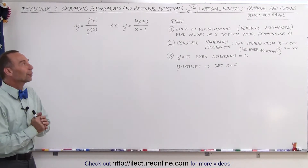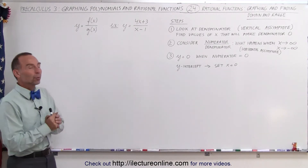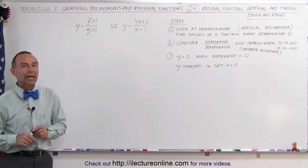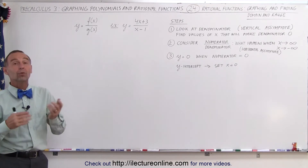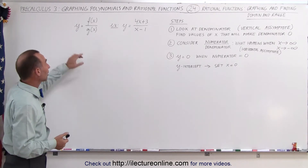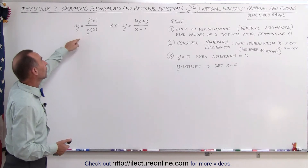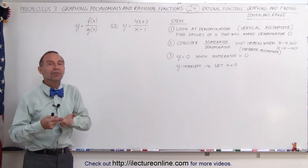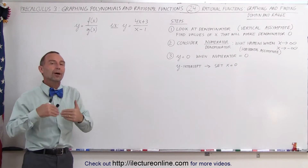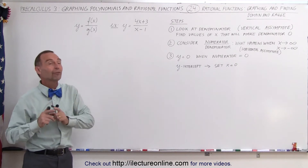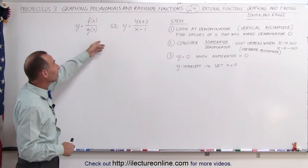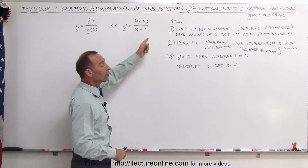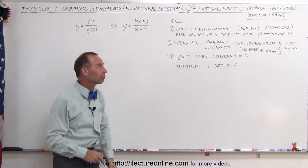Welcome to ElectronLine. Now we're going to start talking about rational functions, how to graph them, and how to find the domain and the range. What is a rational function? A rational function is a function in the form of f(x) divided by g(x) — basically a fraction where the numerator and denominator are both functions of x. For example, y equals 4x plus 3 divided by x minus 1 is a rational function.